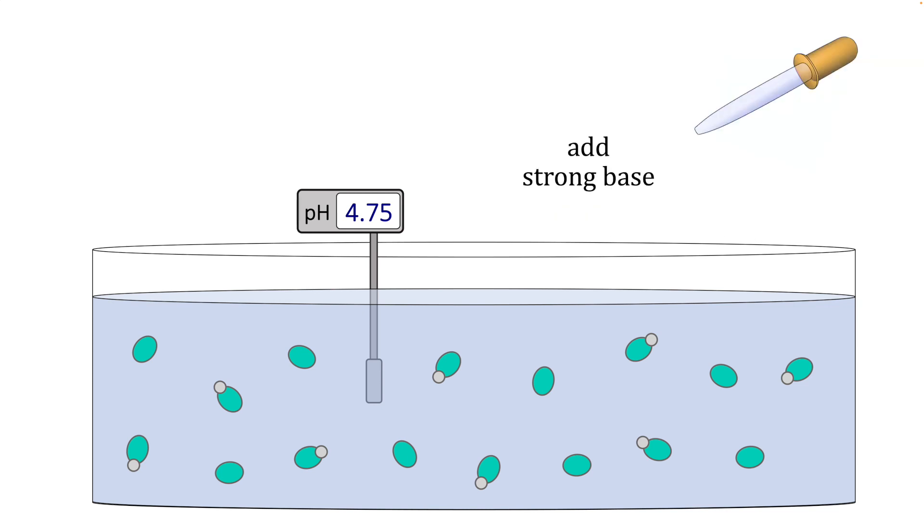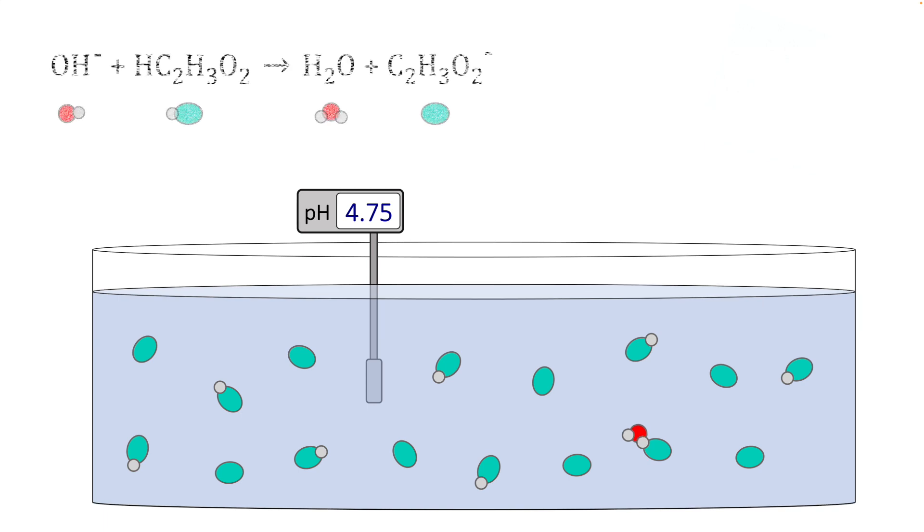Now what happens if we add a strong base, which contains hydroxide ions, to this buffer? Well, when the hydroxide ions enter the solution, they encounter and react with acetic acid molecules. The reaction that takes place is the hydroxide ions reacting with the acetic acid molecules to form water and the acetate ion.